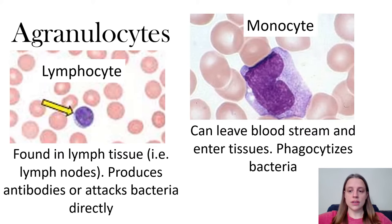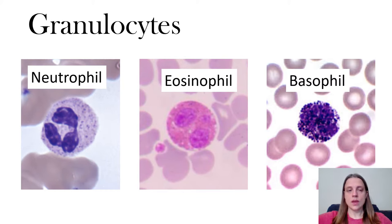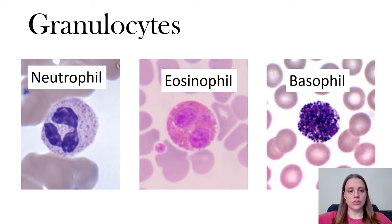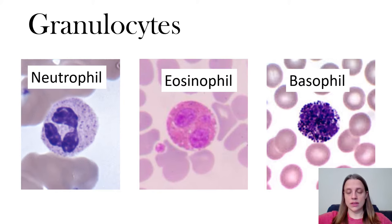You also have monocytes, which can leave the bloodstream and enter tissues, and they are also phagocytic. So how do we tell these apart? First you have to ask yourself: is it a granulocyte? Do you see those little tiny granules inside the cell?